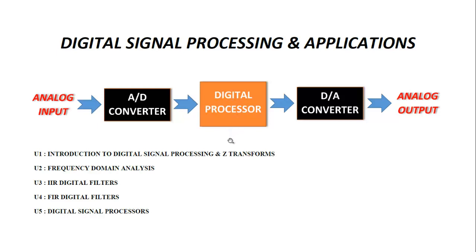Before going to the block diagram, I want to discuss two types of signals: one is analog signal and the other one is digital signal. What we are having basically is an analog signal — for example, what I am speaking to you is an analog signal. The computer needs to convert this analog into digital. Then what you are hearing, the computer converts that digital into analog form so that you can understand. So basically, we have an analog input which has been given to the A/D converter, because the digital processor only understands digital signals.